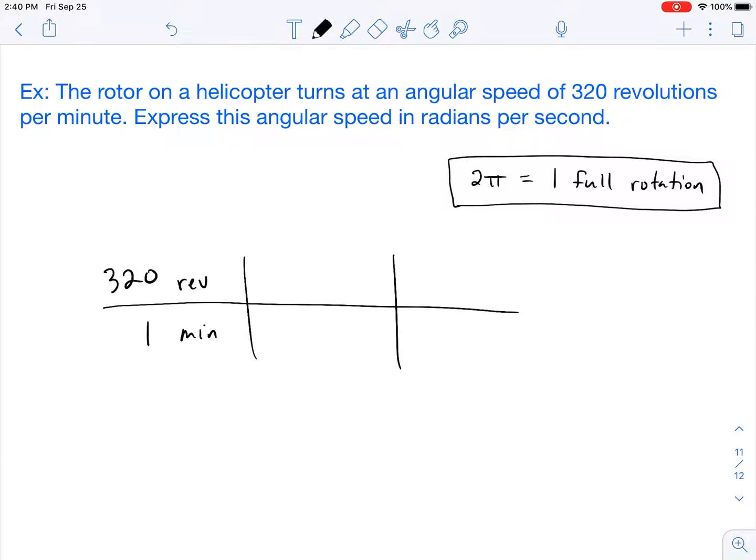So what we need to be able to do is cancel out our units. If I got minutes on the bottom I need to have minutes on the top so that they can cancel out. I know for every one minute there are 60 seconds. So I can go ahead and cancel out my minutes.